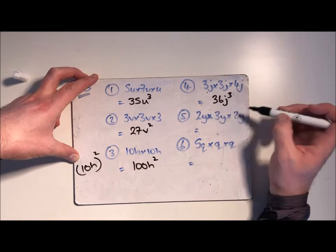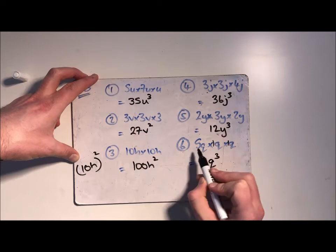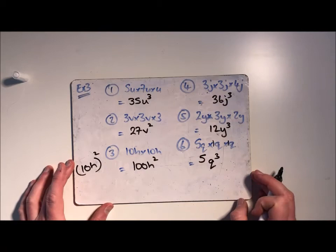2 threes are 6. 6 times 2 is 12, and then y multiplied by y multiplied by y is y cubed. q cubed, and then there's just technically a 1 there and a 1 there. 5 multiplied by 1 multiplied by 1 is just 5. Okay, so there's 6 of those on that one.